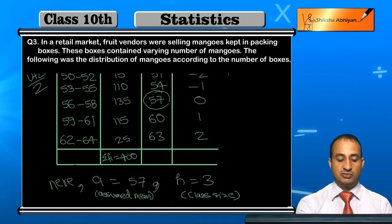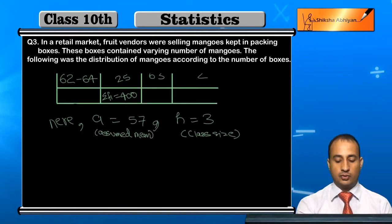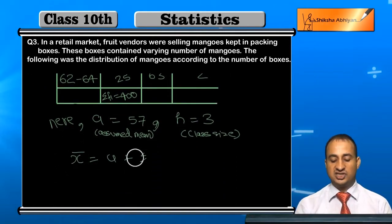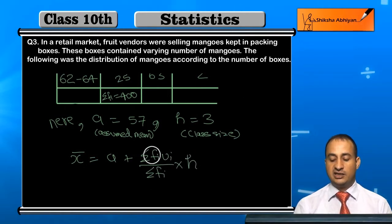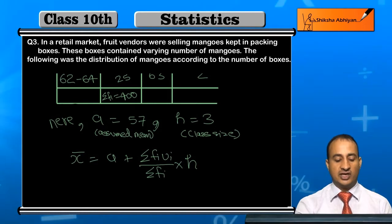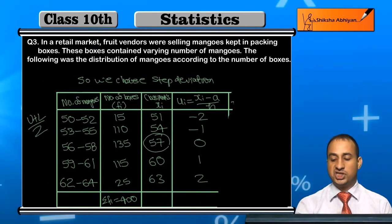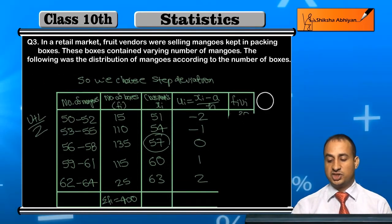Using the step deviation method, the mean formula is: Mean = A + (Σf_i·u_i / Σf_i) × h. Now we need to calculate f_i·u_i for each row and find their sum.